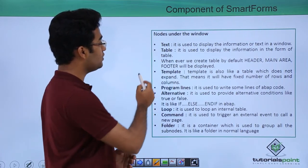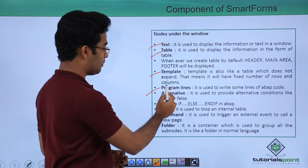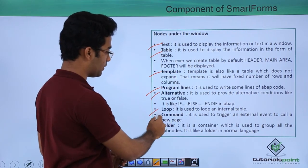There are multiple nodes under the window: Text, Table, Template, Program Lines, Alternatives, Loops, Command and Folders.